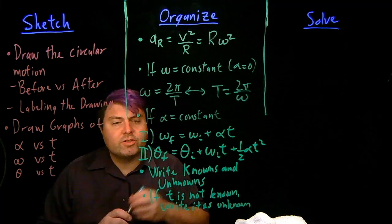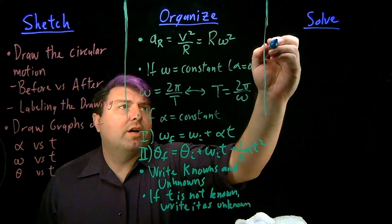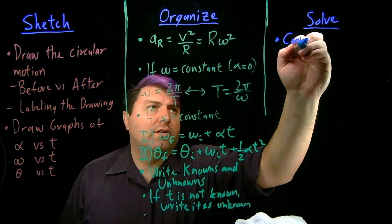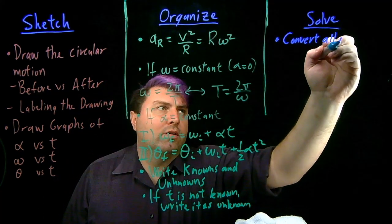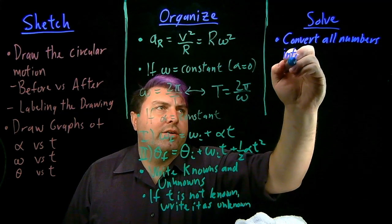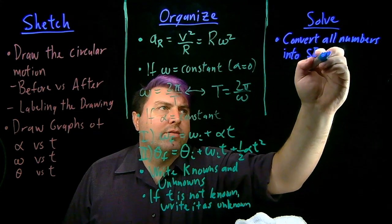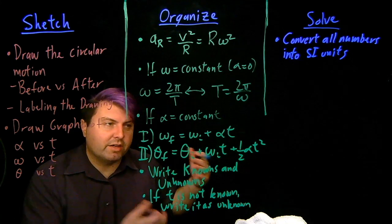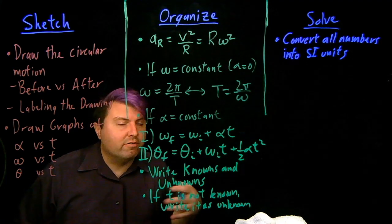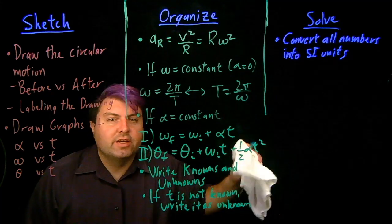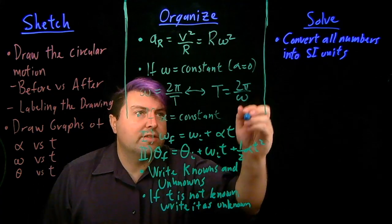So then as we go to solve this, our first thing that's going to help us out is we want to convert all of our numbers into SI units. This is our first real experience with having to deal with things like revolutions per minute, hours, days, things like that. We want to convert all of that into seconds and also have our radians and things like that.